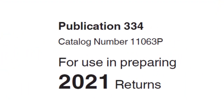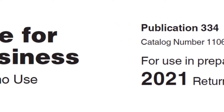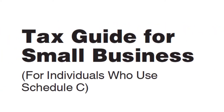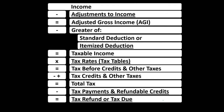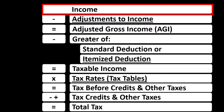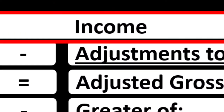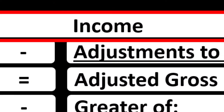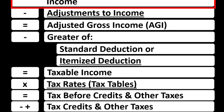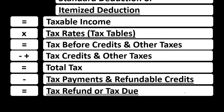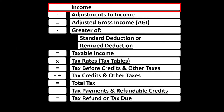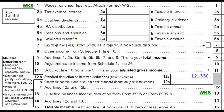Most of this information can be found in Publication 334, Tax Guide for Small Business, Tax Year 2021 Income Tax. The formula starts with Line 1 Income, which is supported by another schedule — in essence an income statement — having income and expenses, with expenses basically being deductions, and the net rolling into Line 1 Income of the Income Tax Formula and the first page of Form 1040.